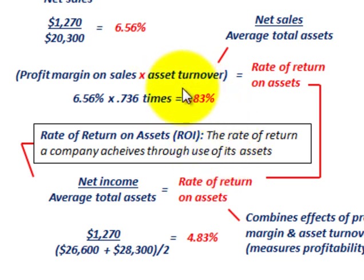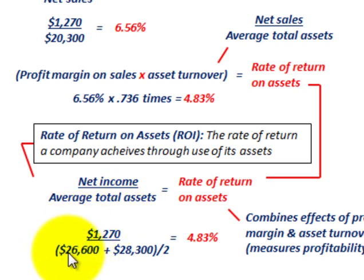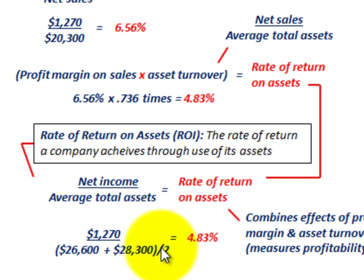The alternative method: simply take net income and divide it by average total assets, and that equals our rate of return on assets. So our net income for 20x2 was $1,270,000, divided by the average total assets: $26,600,000 for 20x2 plus $28,300,000 for 20x1. Total those, divide by 2 for the average.